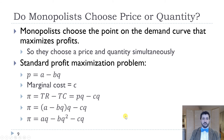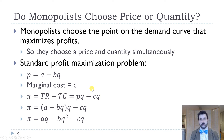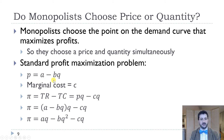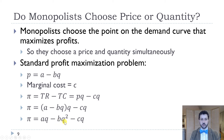How does the monopolist make this choice? Because we write our inverse demand curve as P = A minus BQ, it's easier to choose Q. Our marginal cost is just C, so total revenue is P times Q minus CQ. We take P from the inverse demand curve and substitute A minus BQ into our profit function. Profit equals (A minus BQ) times Q minus CQ, which distributes to AQ minus BQ squared minus CQ. That's our profit function and that's what we're trying to maximize.